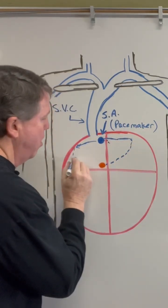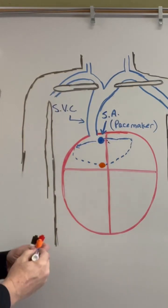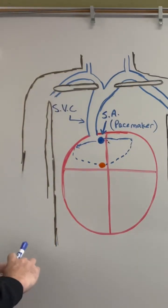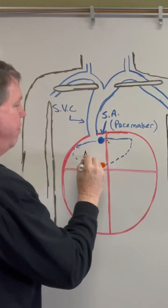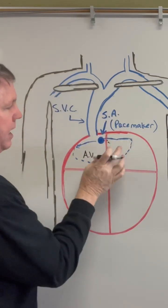This orange thing right here is going to be called our AV node. So I have a sinoatrial node, then I have an atrioventricular node.